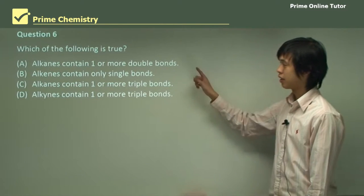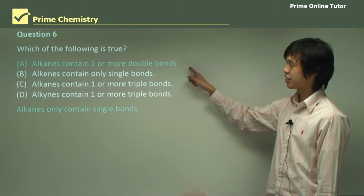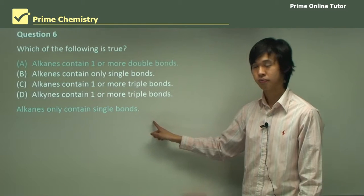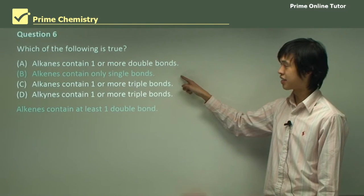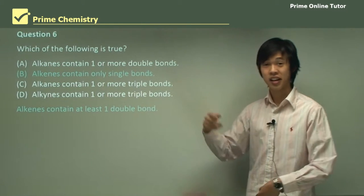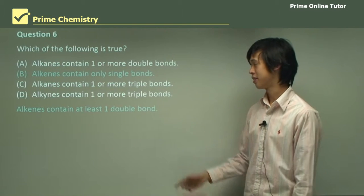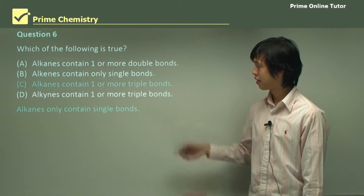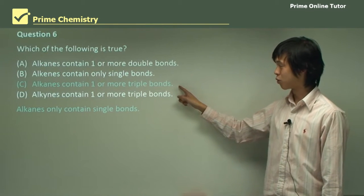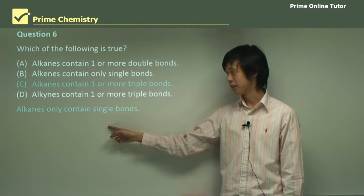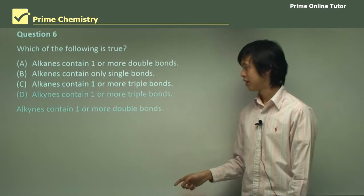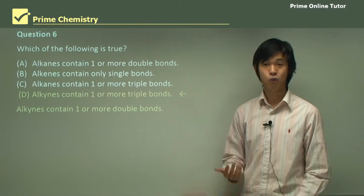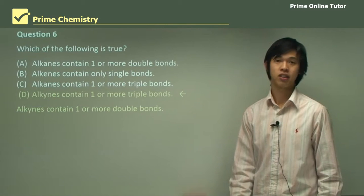Question: which of the following is true? Alkenes contain one or more double bonds? No — wait, alkenes do contain one or more double bonds. Alkenes contain only single bonds? No, that's alkanes. Alkenes contain one or more triple bonds? No, alkynes contain single bonds only in that context. The correct answer is: alkynes contain one or more triple bonds — that's what makes them an alkyne.